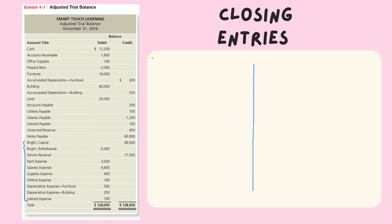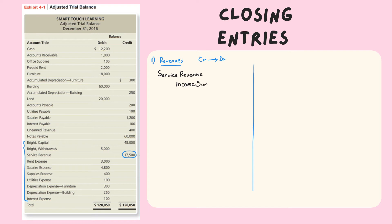Let's do the closing entries. The first closing entry is to close revenues. We need to look at our revenues accounts — it's on the credit side. To close it, to make this account balance equal to zero, I need to debit this account. So I'm going to debit service revenue and credit income summary. Income summary is not a real account; it's an account that will help me close revenues and expenses. The amount will be $17,500. We are done with the first closing entry.